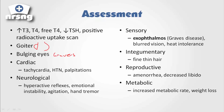Cardiac-wise, the patient is going to have tachycardia, hypertension, and palpitations — their heart is going to be beating very fast. Neurologically, again thinking hypermetabolic: hyperactive reflexes, emotional instability, agitation, and hand tremors. They're going to have so much energy and be moving so quickly they won't be able to contain it. They're also going to have exophthalmos — that bulging eye appearance associated with Graves disease.